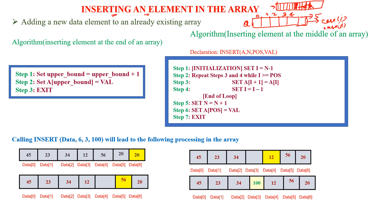Before going into the two cases, what is meant by inserting an element in the array? It means adding a new data element to an already existing array. We are going to see the algorithm for two cases. First case: inserting an element at the end of the array. It is very simple — at the end of the array, set upper bound equal to upper bound plus 1. The upper bound is nothing but your upper index.